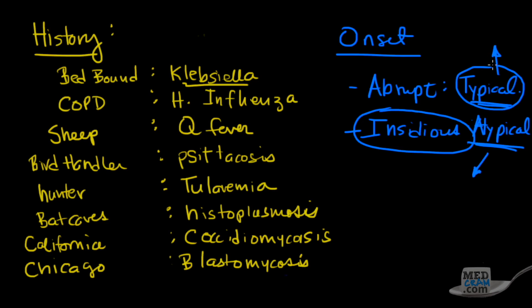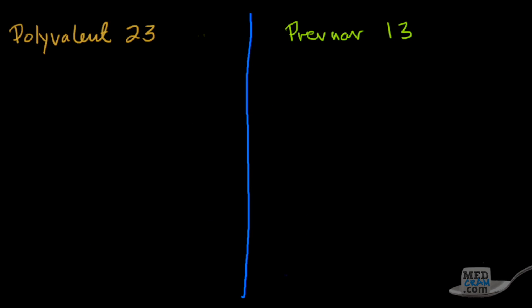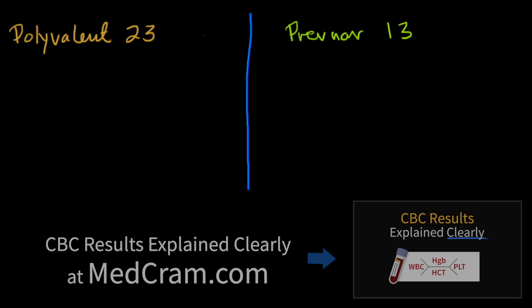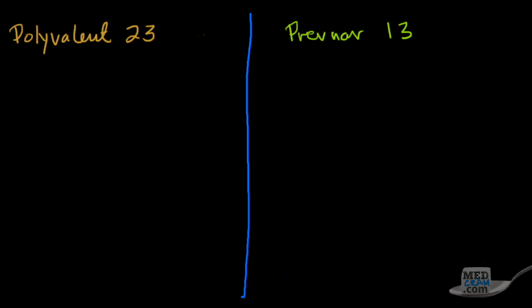The typical organism is streptococcal pneumoniae, and that one has actually gone down quite a bit in the last few years because of what's been going on with the vaccine. There are two different vaccines in the United States that we're using currently: the polyvalent 23, which has been around for some time, and the Prevnar 13. Polyvalent 23 is also known as PPSV23, and Prevnar 13 is also known as PCV13.